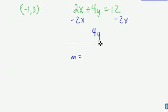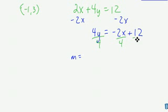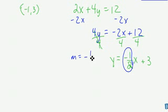So 4y is going to equal negative 2x plus 12, and then I have to divide by 4 to get the y all the way alone. So I divide by 4 on each term, so y equals negative 2 over 4 reduces to negative 1 half, and 12 over 4 reduces to 3. And so my slope for this equation is negative 1 half.